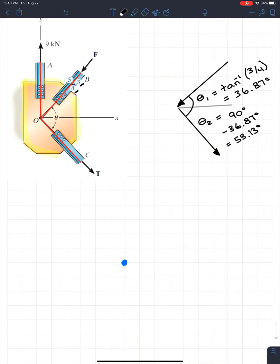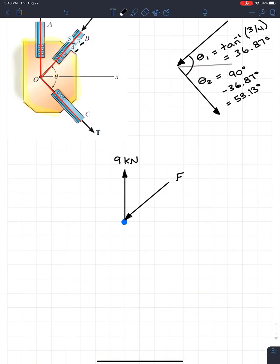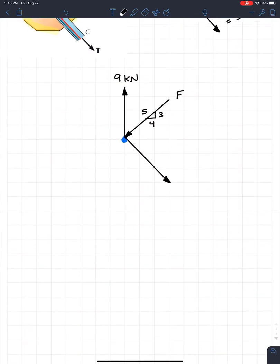On this point we have three forces. We have a 9 kilonewtons that goes up like this. I put the arrow to show the direction and I label it. I have a force F that comes in at an angle. I'm going to label it as F because we don't know what F is. We have to put the geometry with F. We know that its triangle is five, three, and four. Then finally we have T which comes out like this. I'm going to put all the geometry.